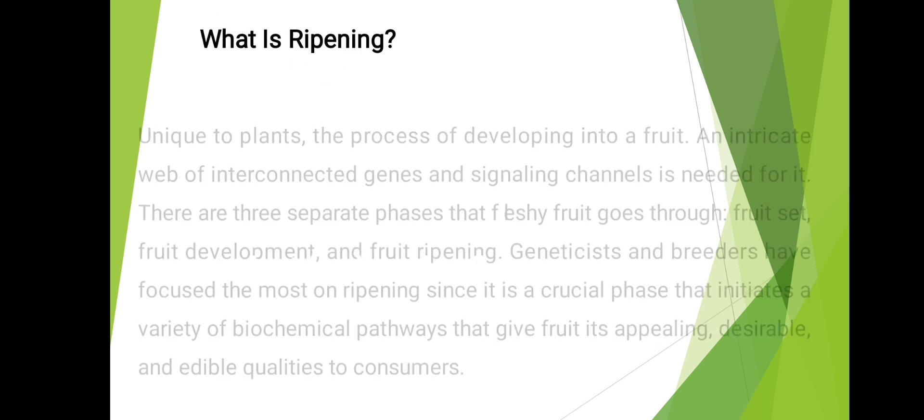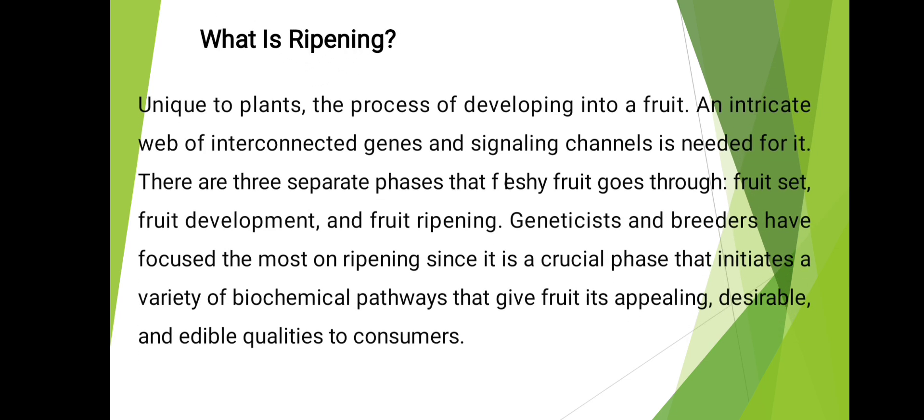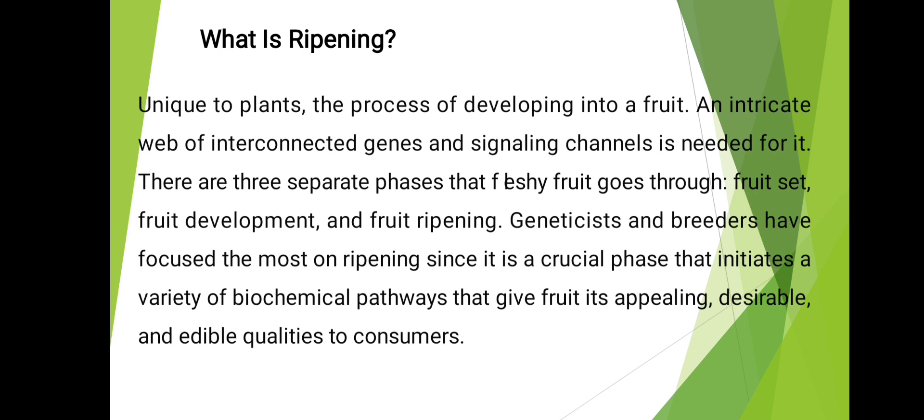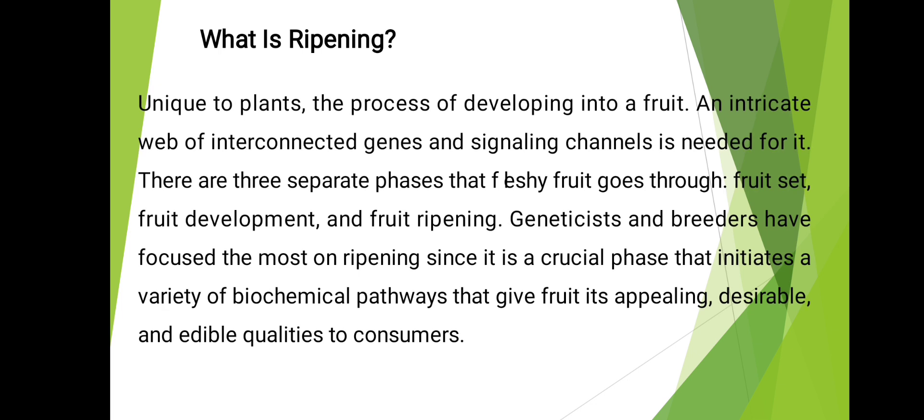What is ripening? Unique to plants, it is the process of developing into a fruit. An intricate web of interconnected genes and signaling channels is needed for it. There are three separate phases that freshly harvested fruit goes through.